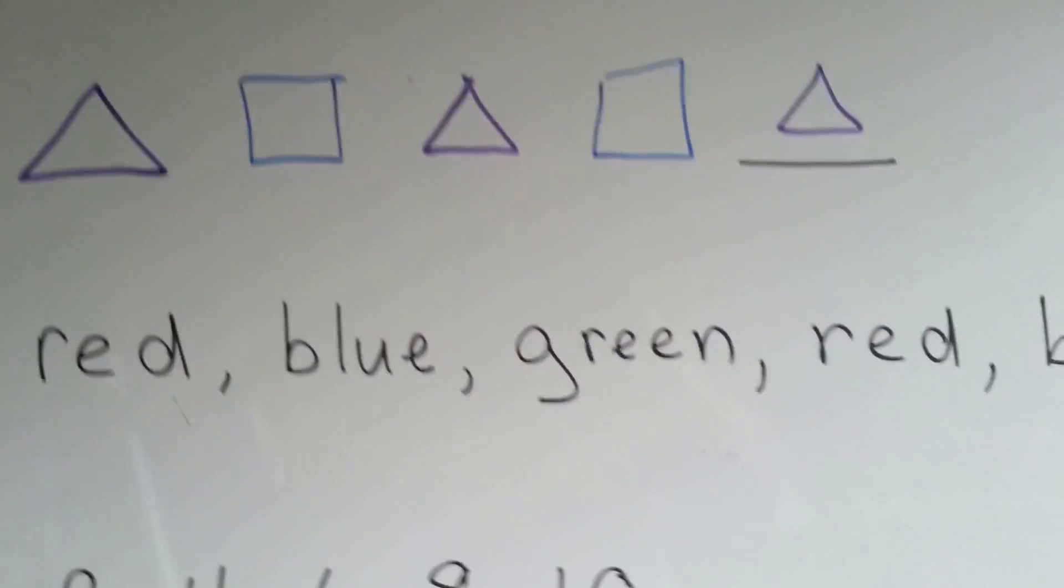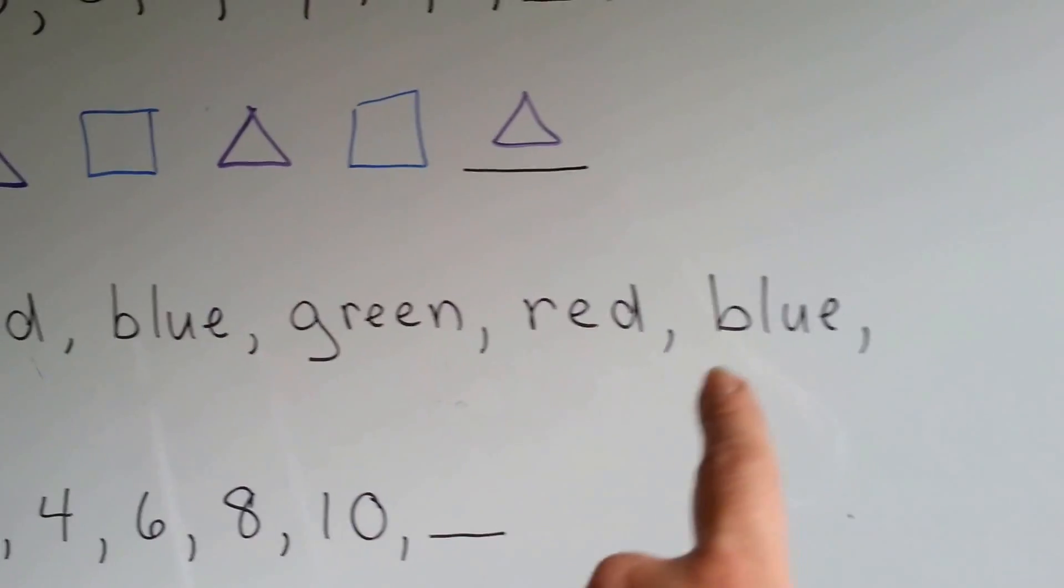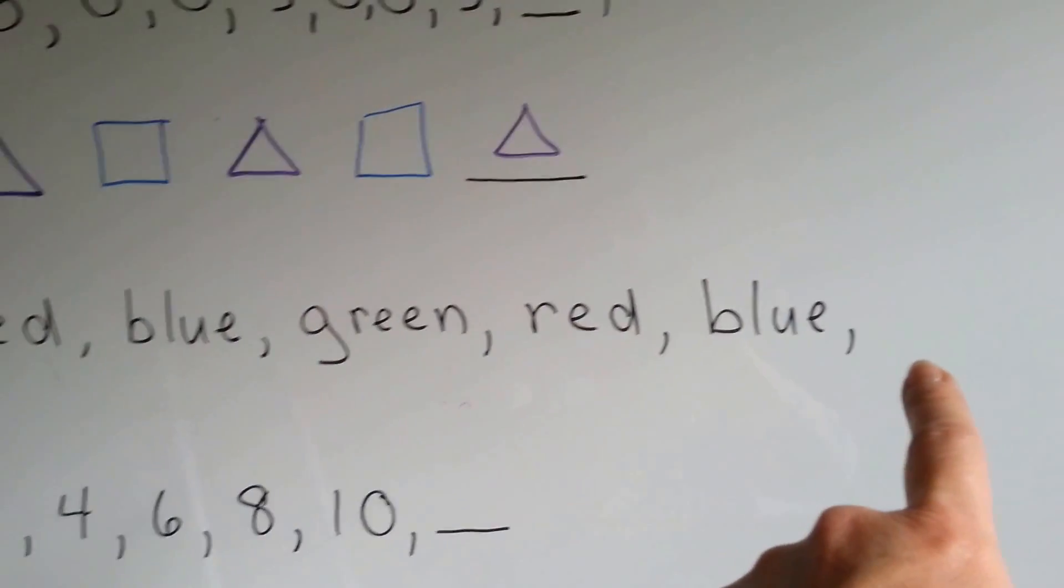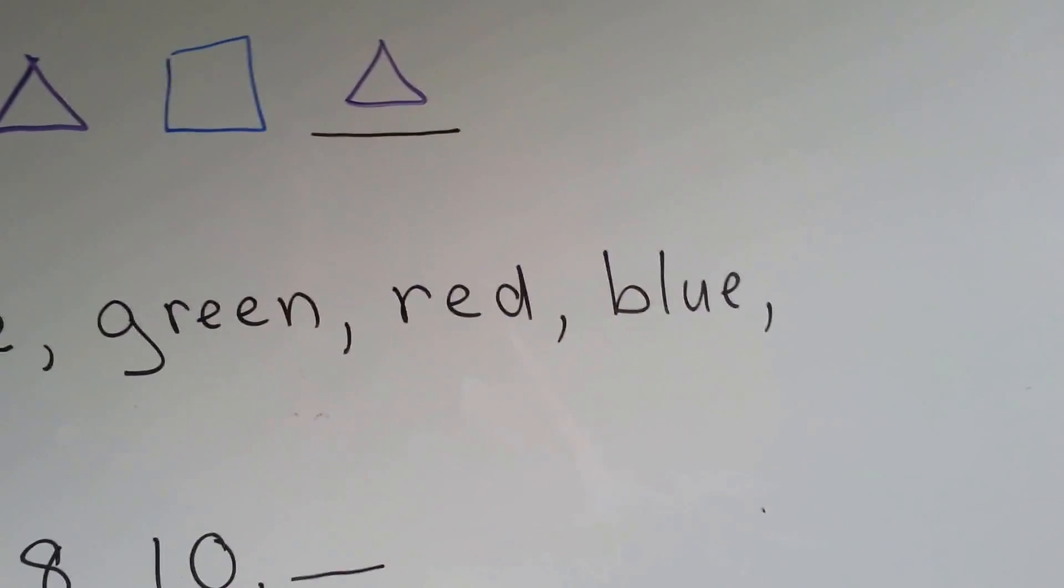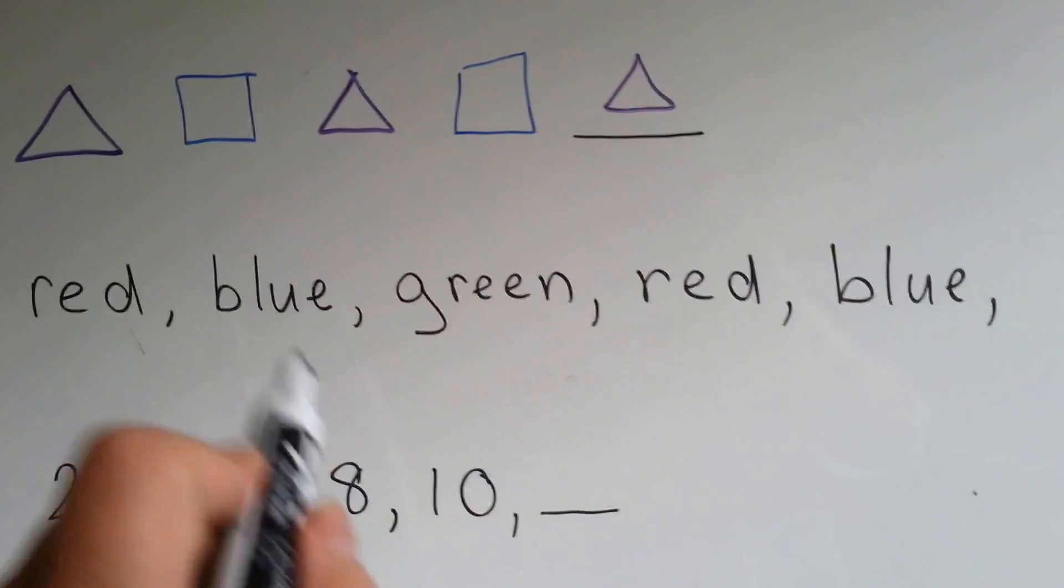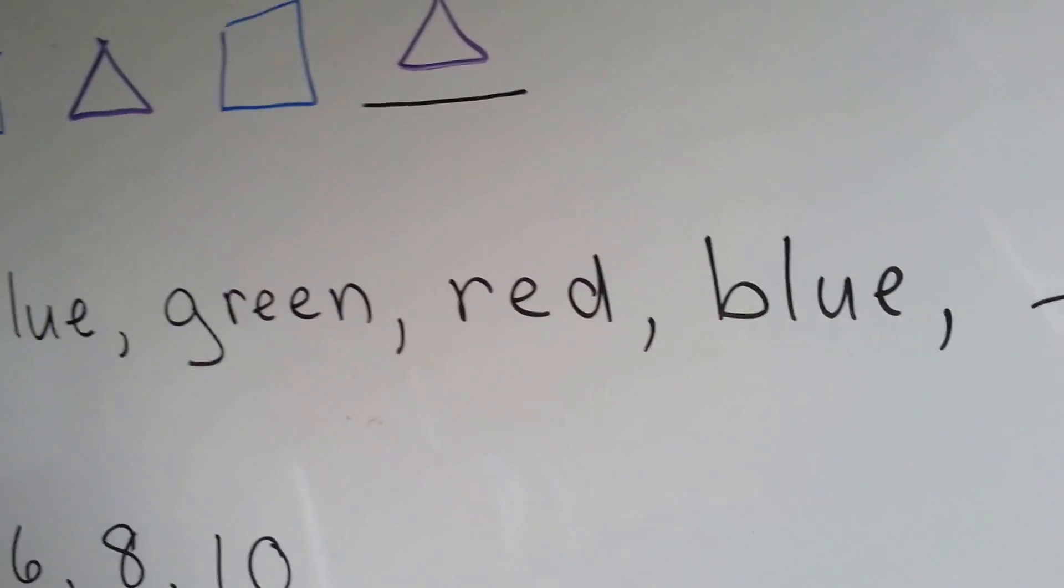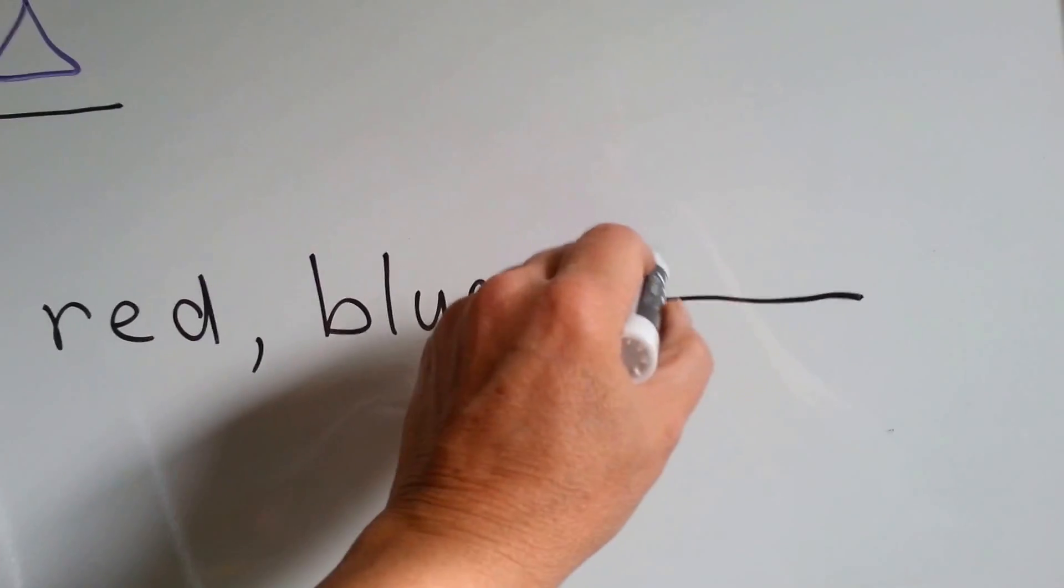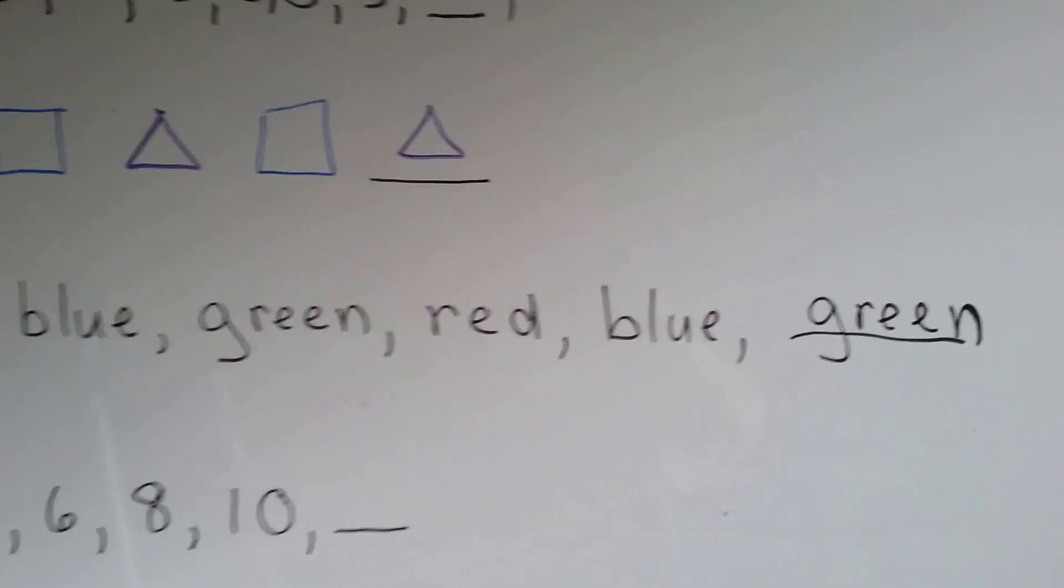How about these words? Red, blue, green. Red, blue. What do you think is going to come next in the pattern? What word should I write? Red, blue, green. Red, blue. Green. That's the pattern.